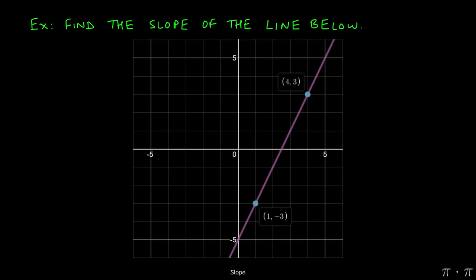Let's say we're asked to find the slope of this line. We can observe that it passes through 1, negative 3 and 4, 3.